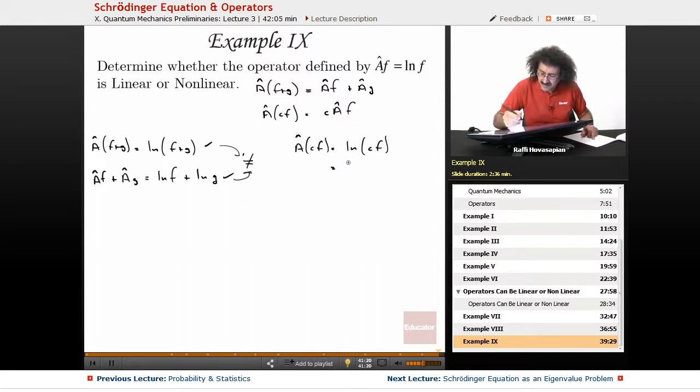Logarithm of something times something. Let's go ahead and expand it just for the hell of it. This is going to be equal to the logarithm of c plus the logarithm of f. So we'll go ahead and leave that one. And now we'll do c of A(f). That's equal to c times the natural logarithm of f.